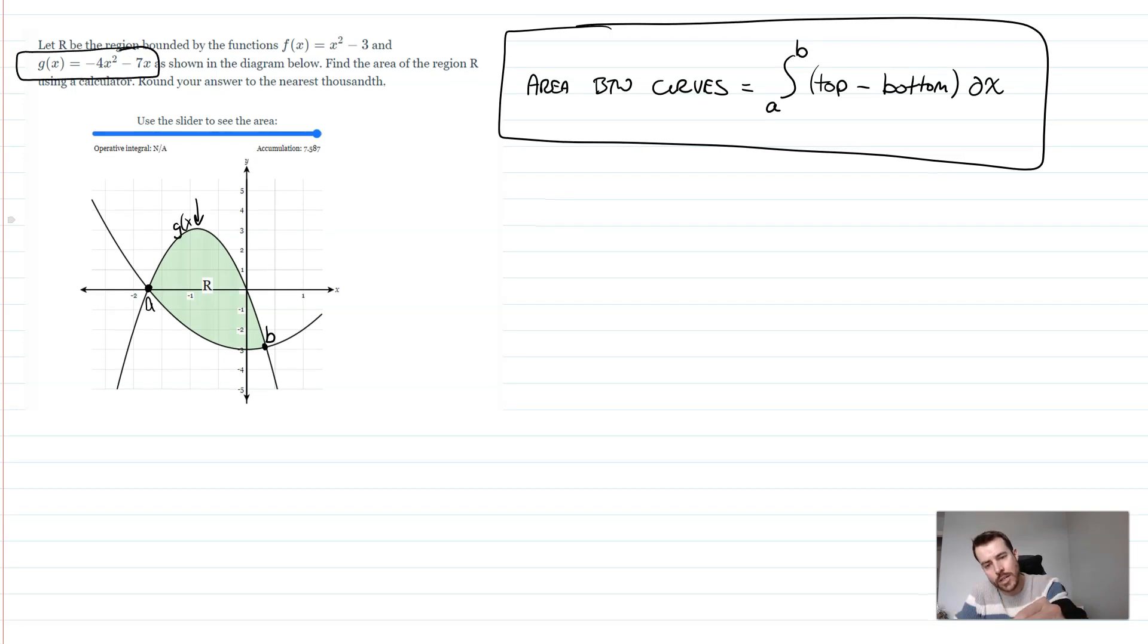In this case, that's going to be the g(x) curve here. So we're going to take g(x), which is our top function, and we're going to minus our bottom function, which obviously then has to be the upward facing parabola, or f(x) here.